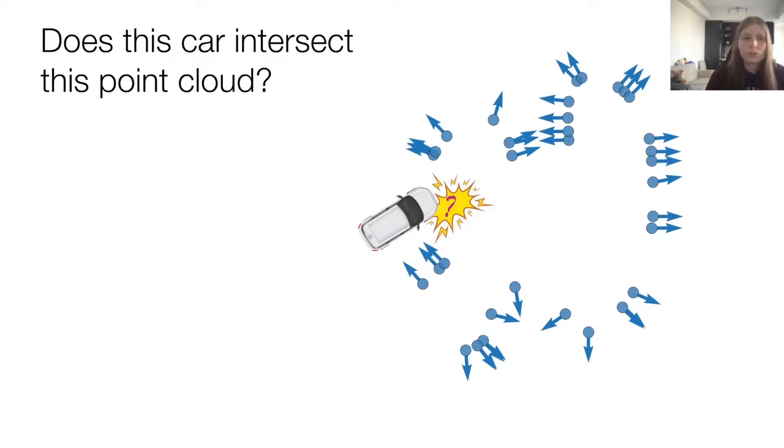Before we wrote this paper, the way that we would have answered this question, and perhaps the way that you would answer it too, is by using a surface reconstruction algorithm to convert this point cloud into a fully determined surface representation, and then check if the car intersects with that surface.